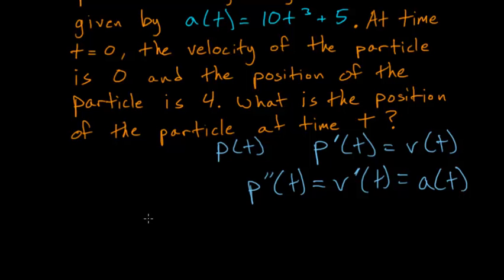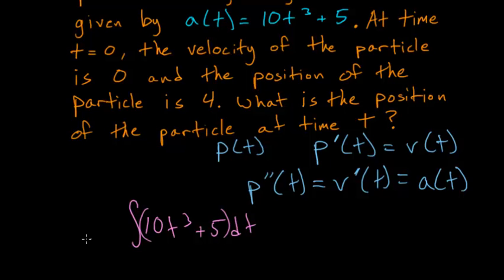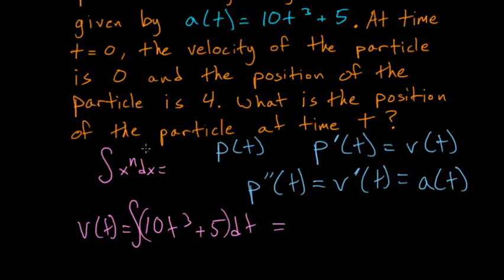We have 10t³ + 5, and if we take an integral of this with respect to t, then this will be equal to the velocity at time t. We'll use the power rule for taking integrals, where if we had the integral of xⁿ dx, then this would integrate to x^(n+1) divided by (n+1), plus a constant. So we'll apply that here, integrating each term separately since we have a sum.